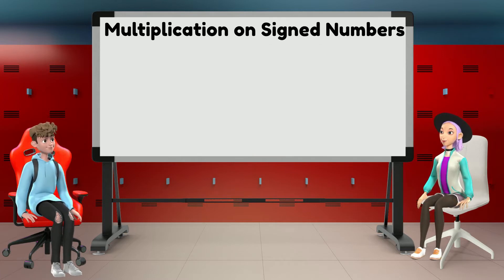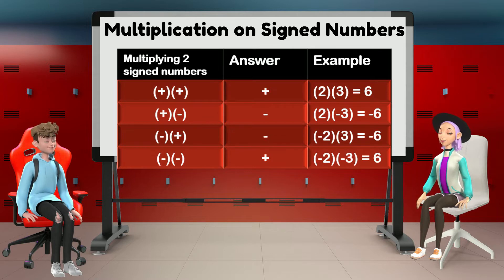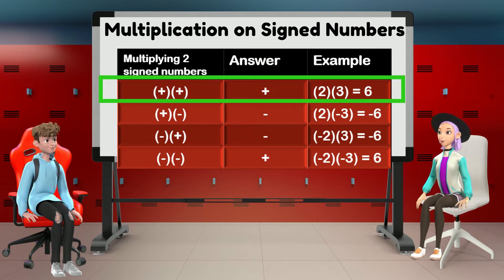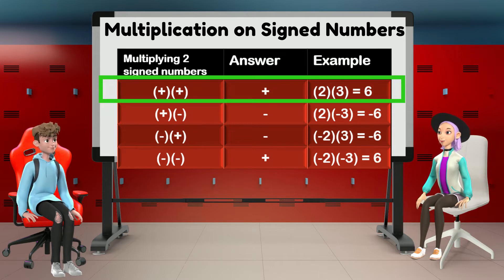Multiplication on signed numbers. When multiplying two signed numbers, let's remember the following rules to get the right sign for the answer, or what we call the product. Product is what we call the answer to multiplication. First case: a positive number multiplied by another positive number gives a positive product.